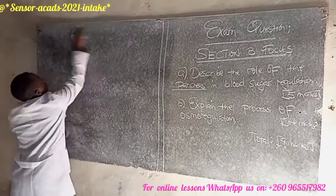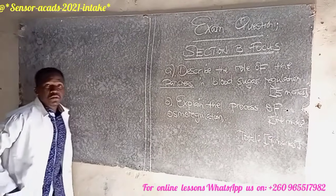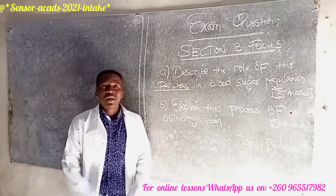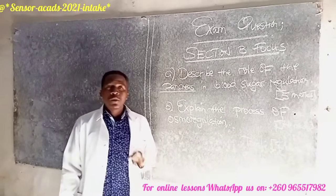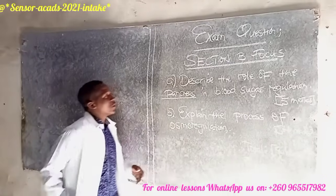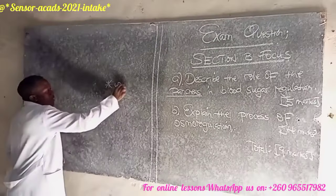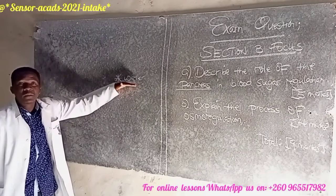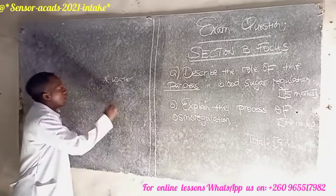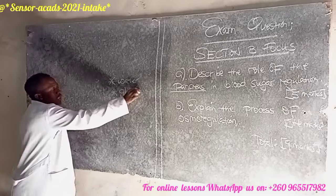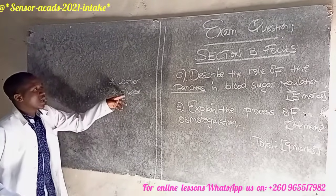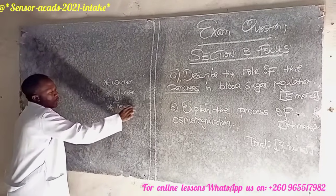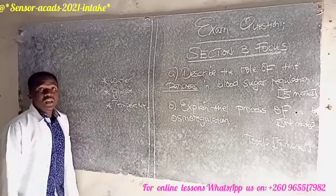Blood sugar regulation comes from the biological topic called homeostasis. Homeostasis is the maintenance of a constant internal environment. Under homeostasis, many things are being regulated: the maintenance of water levels is called osmoregulation, the maintenance of glucose — also known as blood sugar — is called blood sugar regulation, and the maintenance of temperature in the body is called thermoregulation.